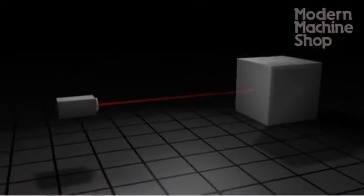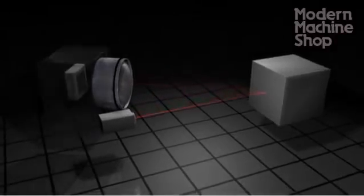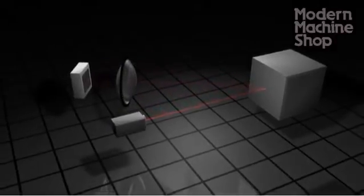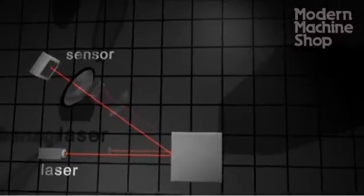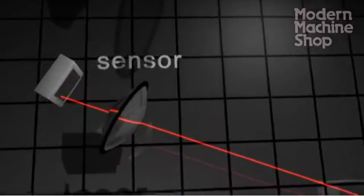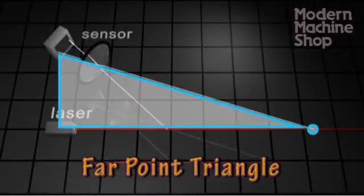A laser scanner works by reflecting light off a surface. The reflected light is measured by its location on a sensor, much like a camera. The location is then triangulated to measure each point's offset from the laser.